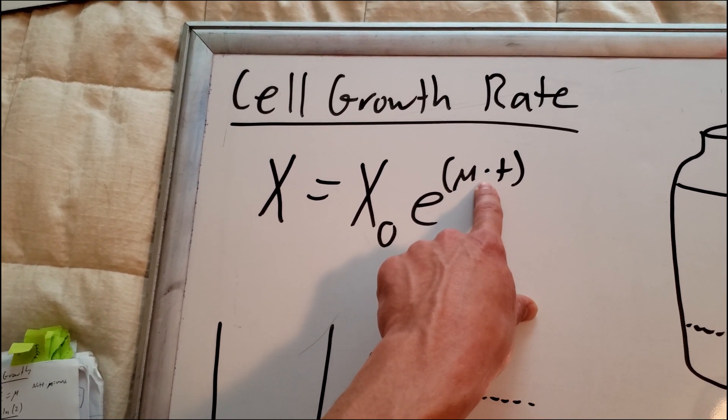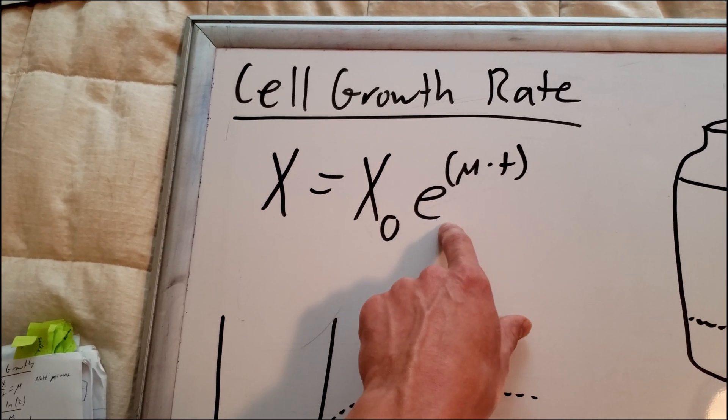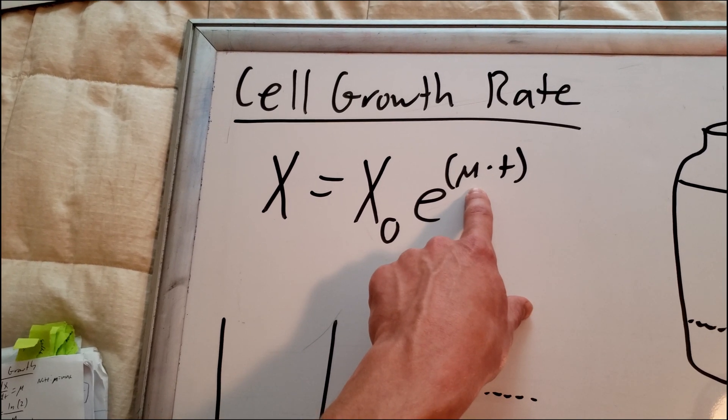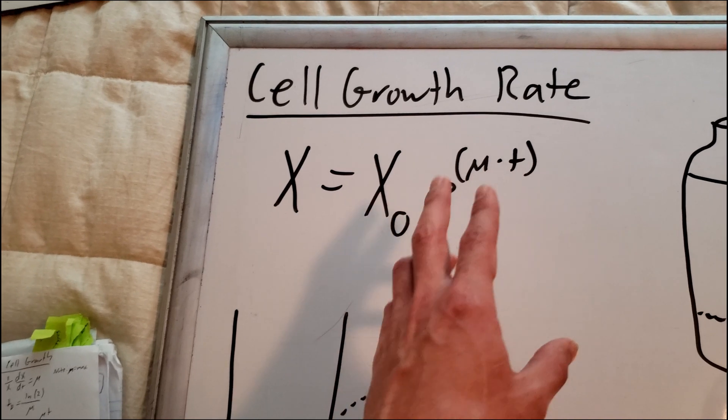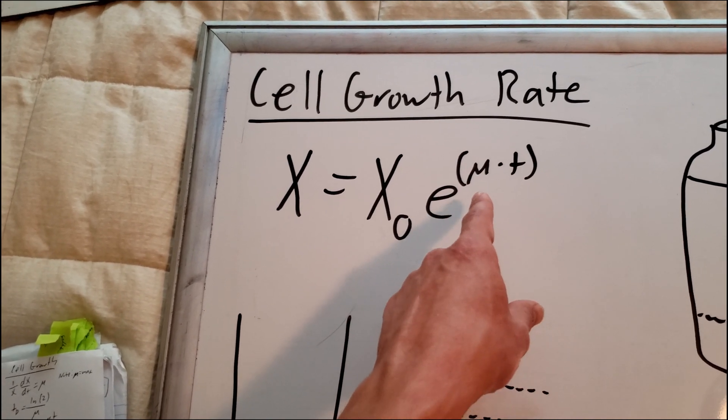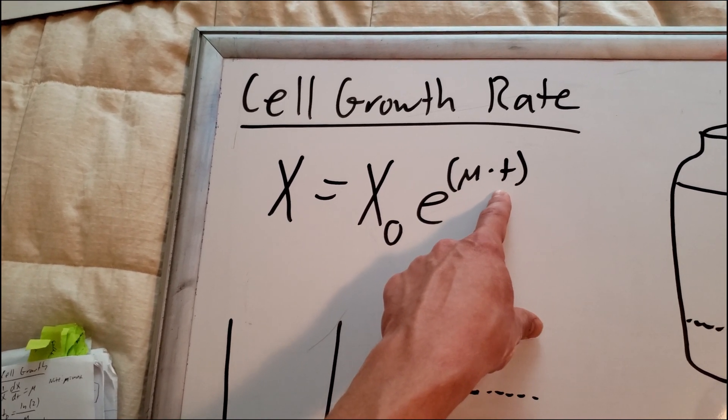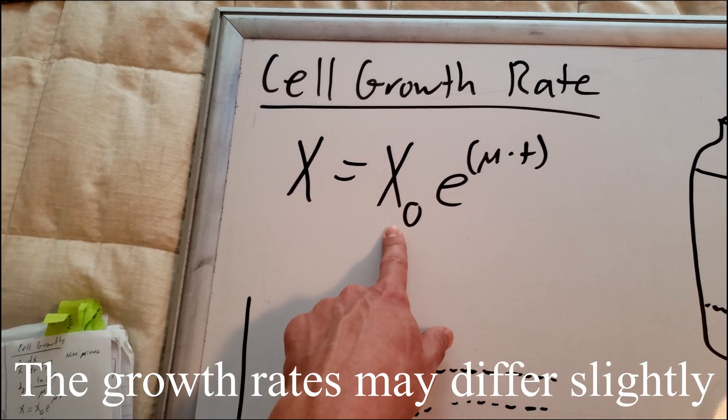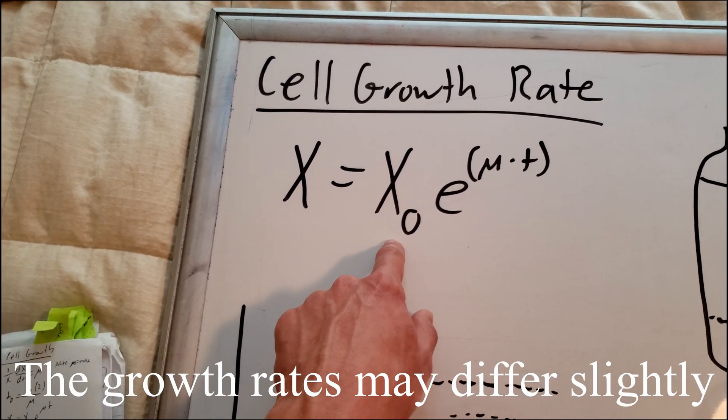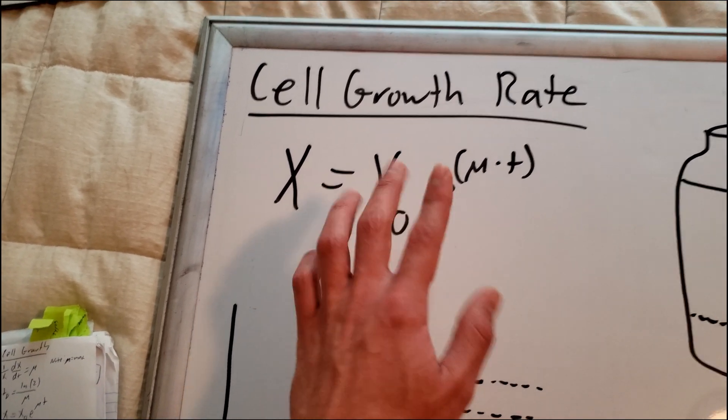So it's E raised to the growth rate times time. The growth rate and the time both have a larger influence because they're being raised to this exponential. But in our case, since we're comparing the same consortium of cells, our mu, our growth rate and our time are both the same. So we don't have to worry about those. The only thing that's different is going to be our initial concentration of cells. So that's important.